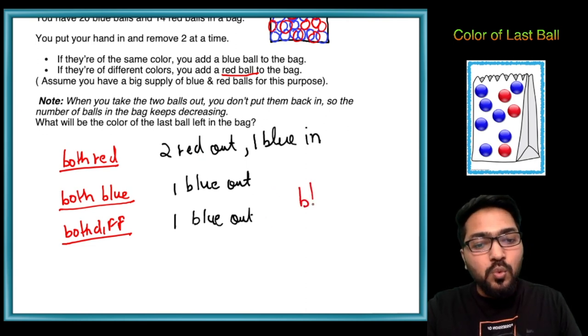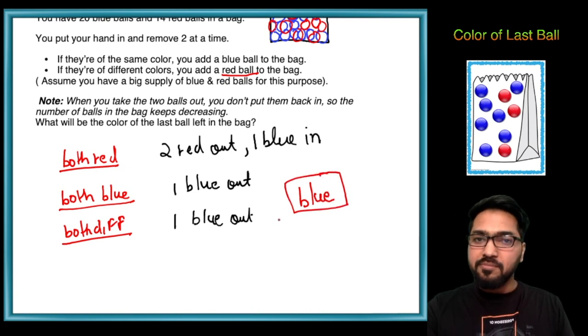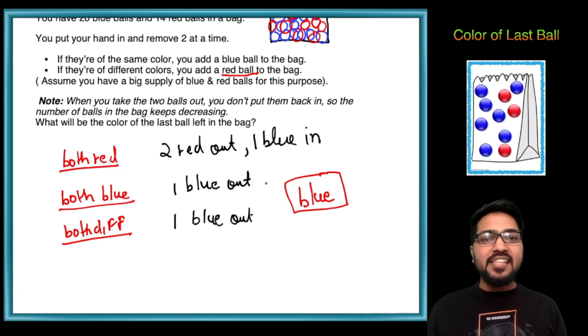So it can never happen that only one red ball is left. So obviously our answer is going to be blue. So our answer is blue ball. I hope the idea is clear. I'll see you in the next video with another interesting puzzle. Thank you.